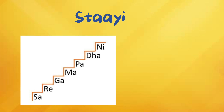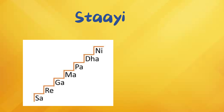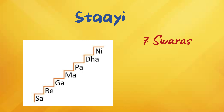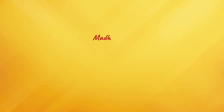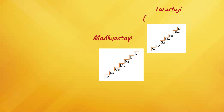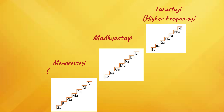The interval or span made up of Shadja to Nishadha is called Stai. The Stai comprises all 7 Swaras and their other varieties of Swarasthanas. This span of Saptaswaras is known as Madhyasthai. The next span of Saptaswaras beginning with Shadja that comes after Nishadha of Madhyasthai is called Tarasthai. And similarly, the span of Saptaswaras below Madhyasthai is called Mandrasthai.